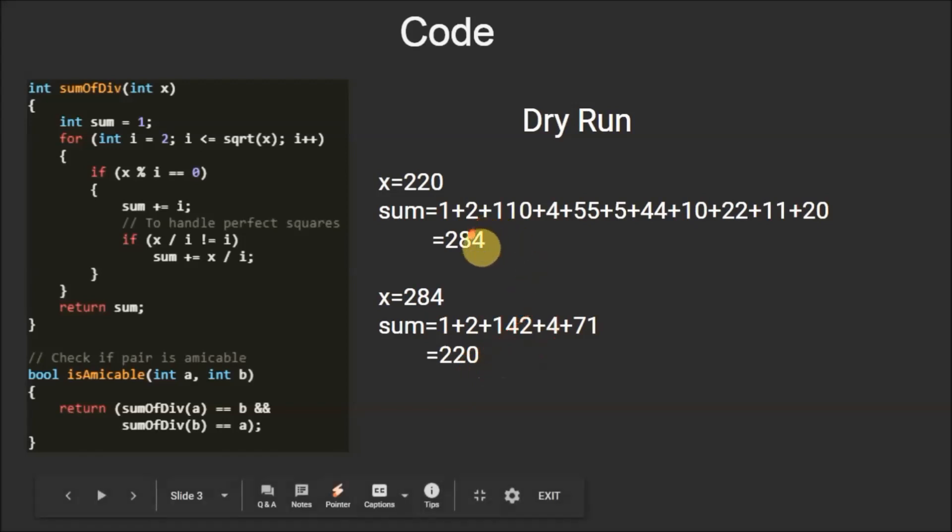So as the first sum is 284 which is equal to the second number, and the second sum is 220 which is equal to the first number, so this is an amicable pair.